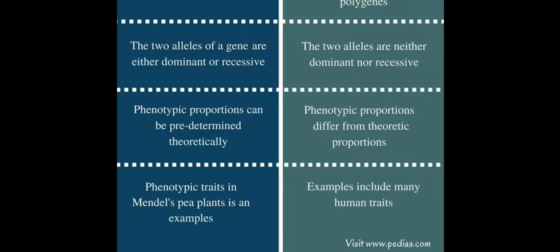Mendel performed his experiment on garden pea plants. From these pea plants, Mendel concluded and formed seven contrasting characters related to the plants. These pea plants have short life cycles and a short period of time for reproduction.